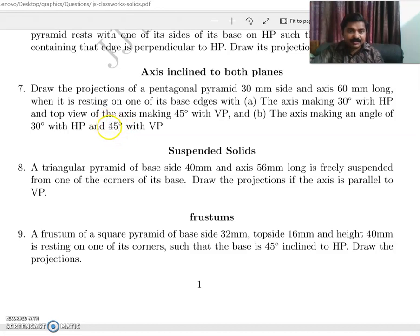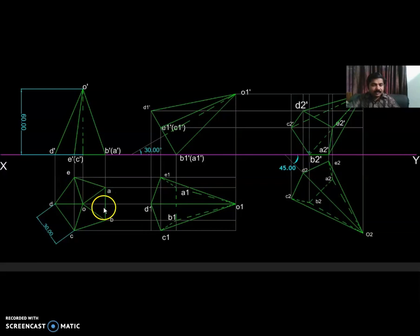In this case, pentagonal pyramid is resting on its base edges. So in the first top view, base edge having 30 mm AB is drawn perpendicular to XY line because it is perpendicular to VP. You complete the top view and project from the top view and obtain the front view. The altitude is 60 mm.